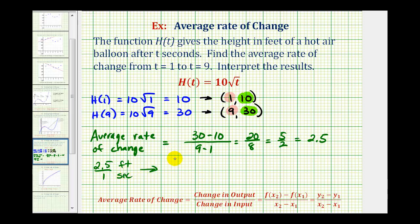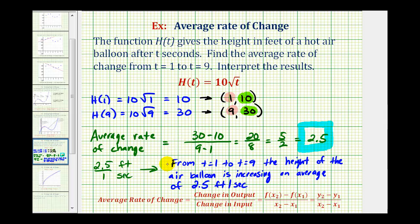So this tells us from t equals 1 to t equals 9, the height of the air balloon is increasing an average of 2.5 feet per second. So here's our average rate of change, 2.5, and here's what it means.